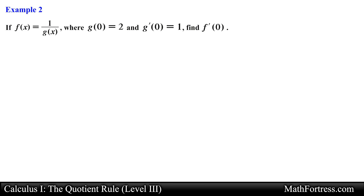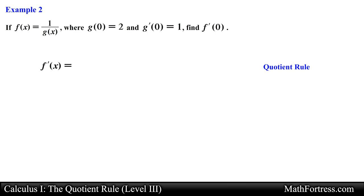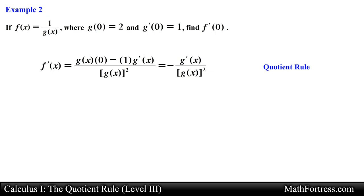Let's try another example. If f of x equals 1 over g of x, where g of 0 equals 2 and g prime of 0 equals 1, find f prime of 0. Here we have a constant 1 in the numerator and g of x in the denominator. This is still a quotient of two functions, so we go ahead and find an expression for the derivative by making use of the Quotient Rule. Applying the Quotient Rule we obtain the following.